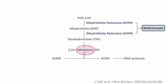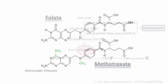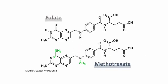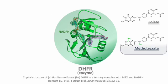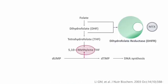Methotrexate binds to dihydrofolate reductase (DHFR), resulting in reduced dTMP synthesis. The molecular structure of methotrexate closely resembles that of folate, causing it to be mistakenly absorbed by DHFR instead of natural folate metabolites. Consequently, this interaction leads to a diminished synthesis of dTMP.